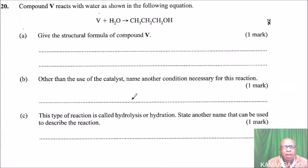This is question number 20. We are told compound V reacts with water as shown in the following equation. So we have V plus water equals to - what does this formula represent?